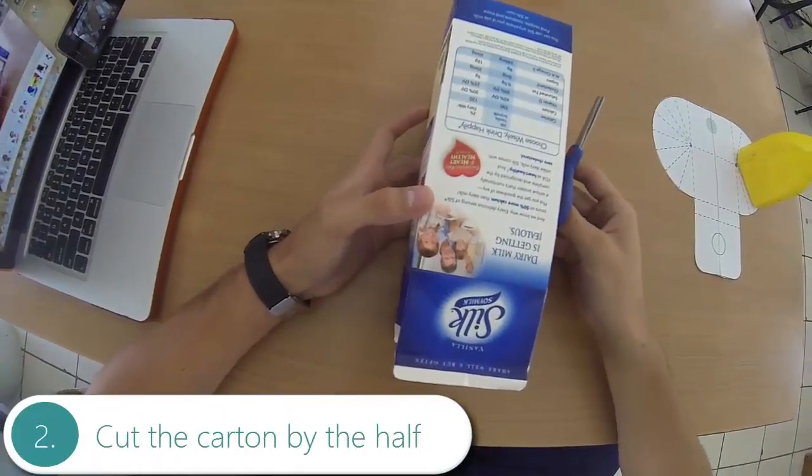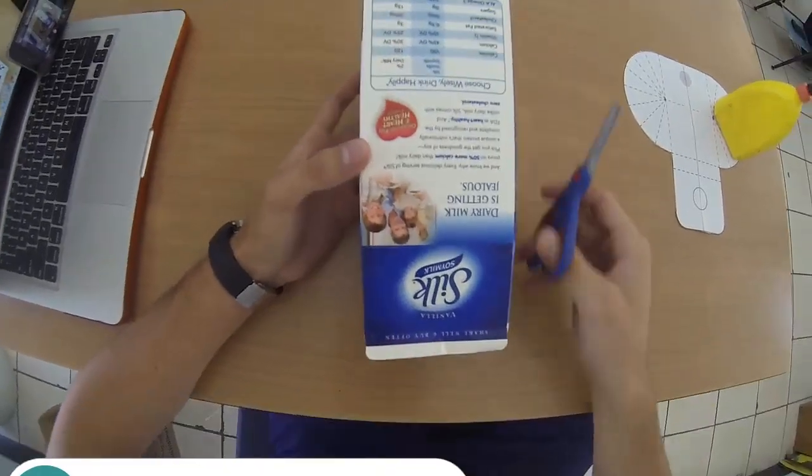The second step is cutting the carton by the half like it's shown above. You will see why in the next step.